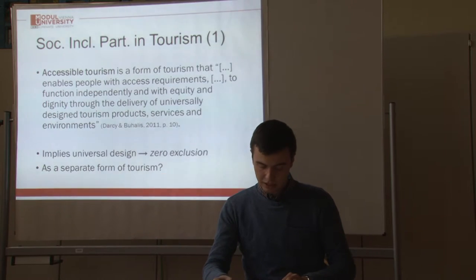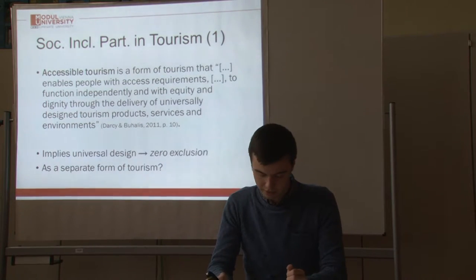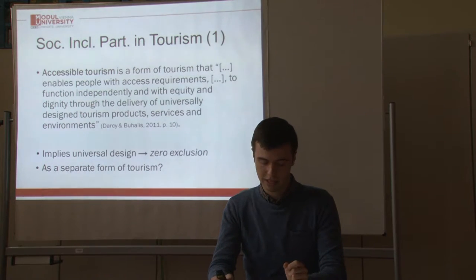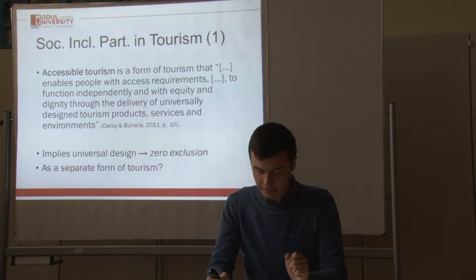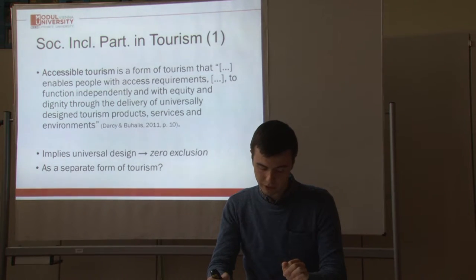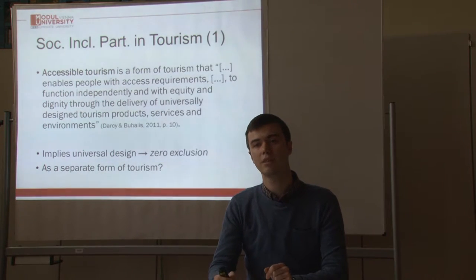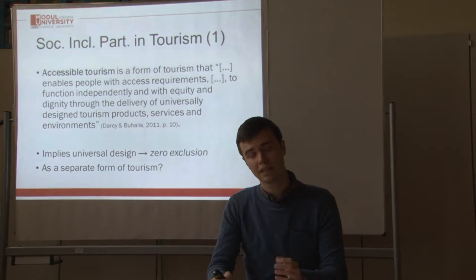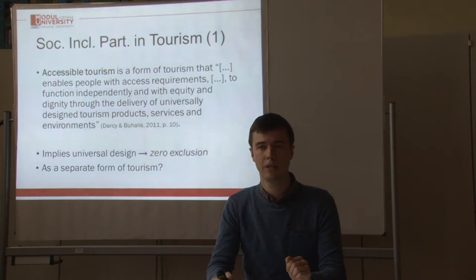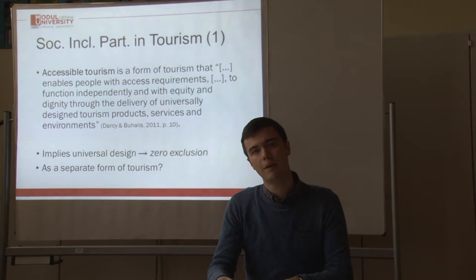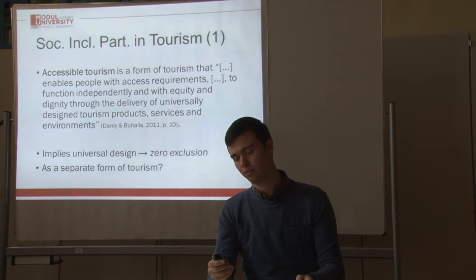I then looked into tourism literature to see which forms of socially inclusive participation can be found in tourism. Looking at the definition of accessible tourism, Darcy and Buhalis define it as a form of tourism that enables people with access requirements to function independently and with equity and dignity through the delivery of universally designed tourism products, services and environments. Universal design implies the design of products usable by people regardless of their abilities, which very much reflects the zero exclusion approach by Schlein and colleagues. But this is a normative definition — what about the real situation in the tourism system?